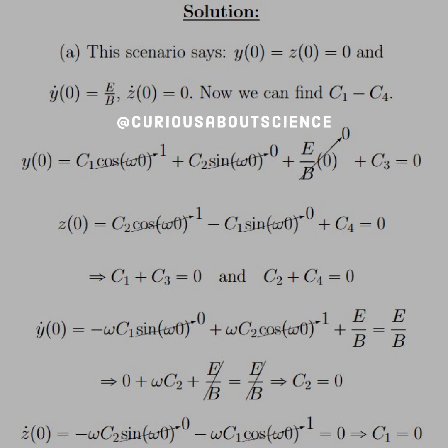When we do this, we see that the cosine cancels to 1, the sine cancels to 0, the e over b term times t cancels to 0, and we're simply left with c1 plus c3 equals 0.